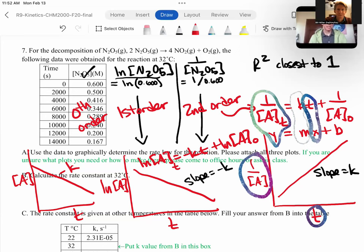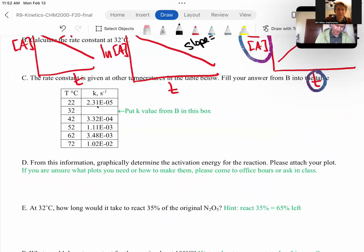So, for example, for the LN of concentration versus time, the slope will be negative. Take away the negative sign. That is your K value. And once you do that, you can put that K value in here. And you'll know that you have probably done it correctly when the K value is between the one at 22 and 42 degrees Celsius because the K value is a function of temperature. It's not a linear function, but it does have to be between those two values. So, you'll put it in there and now we're ready to do part C.